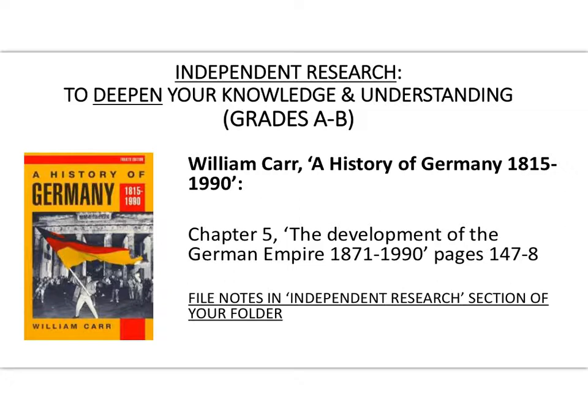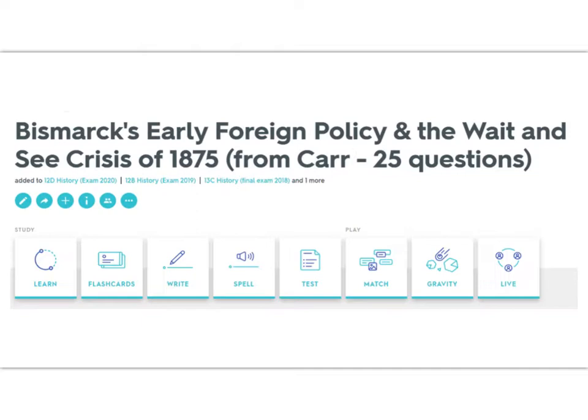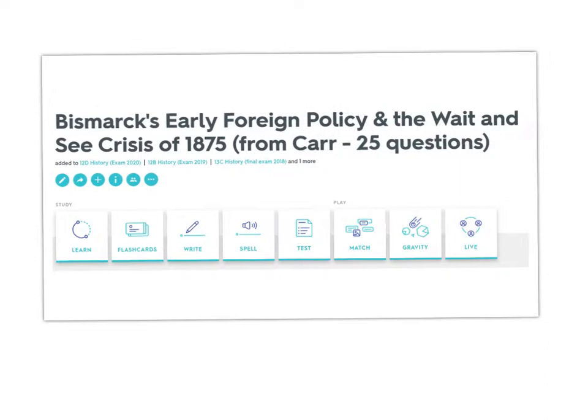William Carr covers this well — it's not a long section in his book, just pages 147 to 148, but there's enough good detail there for you to develop extra detail into your notes. For that reason, I've made a Quizlet for you — 25 questions about Bismarck's early foreign policy and the War in Sight crisis, all taken from pages 147 to 148 of William Carr.